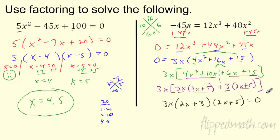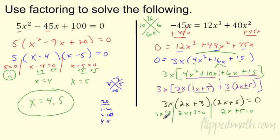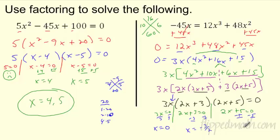This equals zero — that was our ultimate goal. Now divide into three chunks and set each equal to zero. When does 3x equal zero? Divide by 3: x equals zero. When does 2x plus 3 equal zero? Subtract 3, divide by 2: x equals negative 3 halves. When does 2x plus 5 equal zero? Subtract 5, divide by 2: x equals negative 5 halves. So we get three answers in this case.